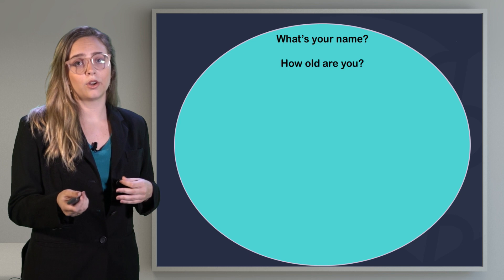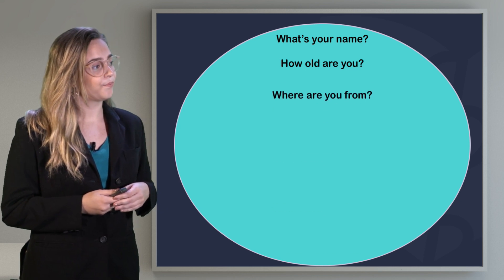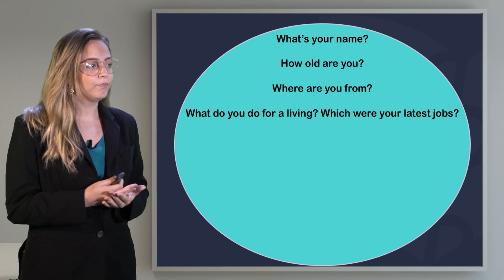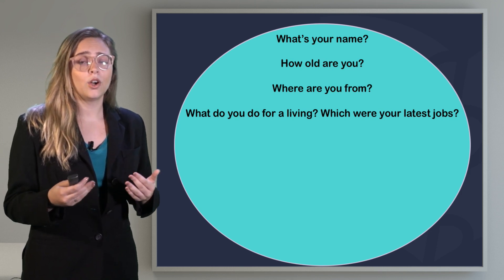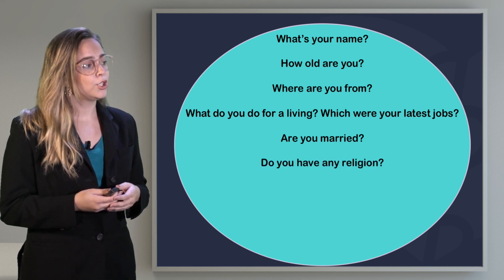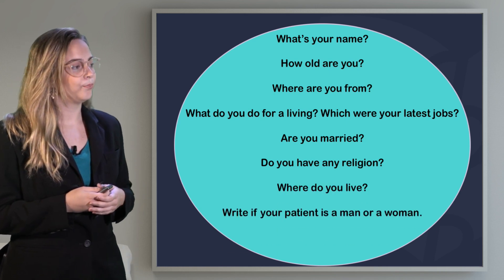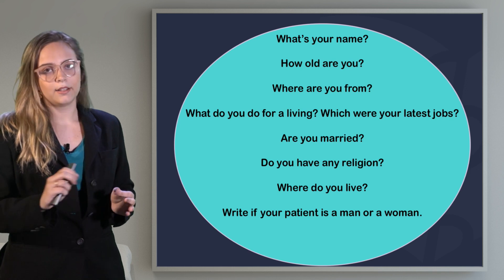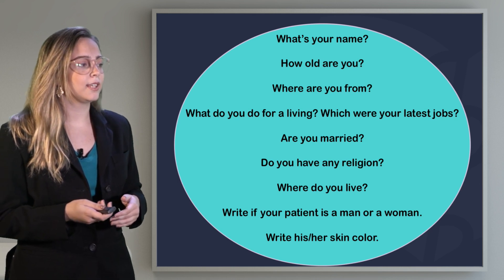How old are you? — you want to know the patient's age. Where are you from? What do you do for a living, and which were your latest jobs? — meaning, what's your occupation? Are you married? Do you have any religion? Where do you live? You should also note whether your patient is a man or a woman — you don't need to ask, just write it on your paper — and write his or her skin color.